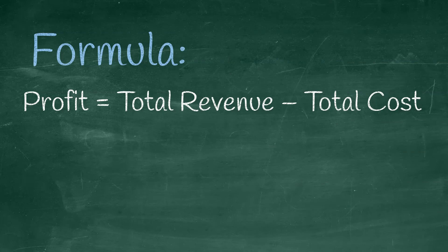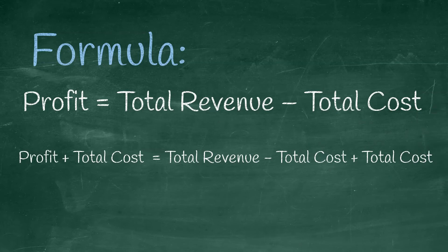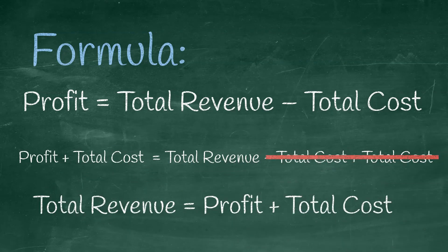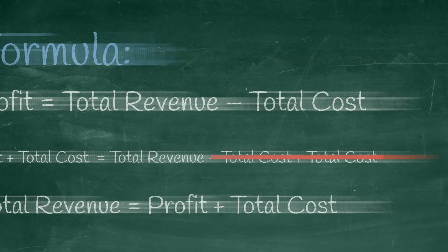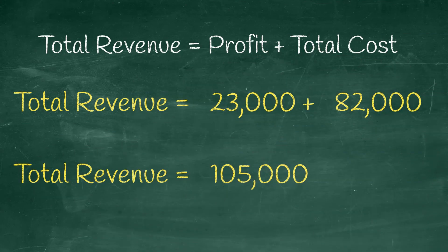Starting from the original formula, we will need to isolate the total revenue to one side of the equation. We can do that by transposing the total cost — adding the total cost to both sides of the equation. Using the resulting formula for total revenue, here is the equation for this problem.